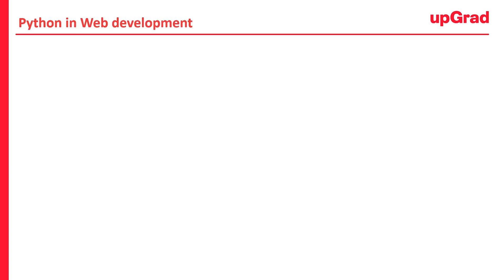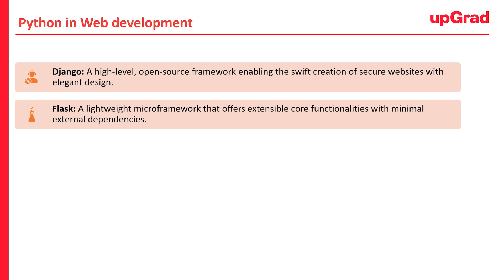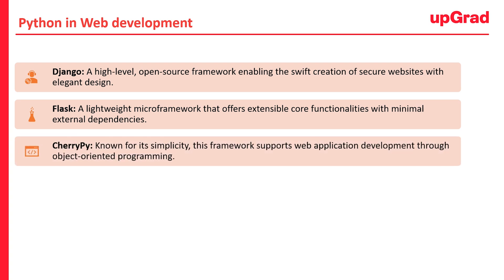Python plays a pivotal role in web development, particularly on the backend. Python facilitates data exchange with servers, interaction with databases, and maintaining security aspects. Python frameworks used in web development include Django — a high-level open-source framework enabling the swift creation of secure websites with elegant design — and Flask, a lightweight micro-framework that offers extensible core functionalities with minimum external dependencies.